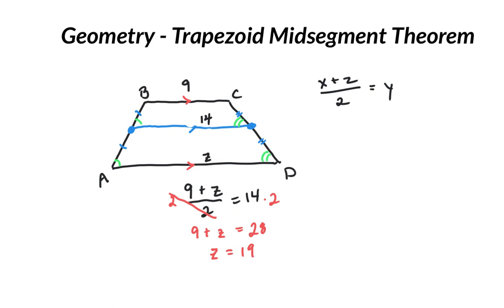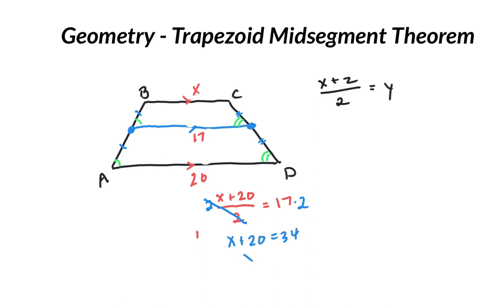So that's another way to do it. The opposite—we could also go the other way. We could say, alright, x plus x plus 20, divided by 2, equals 17. Multiply both sides by 2, so we've got x plus 20 equals 34. Subtract 20, so x is 14.